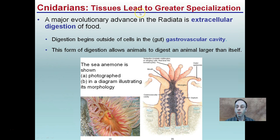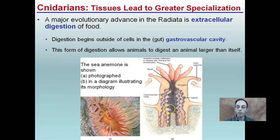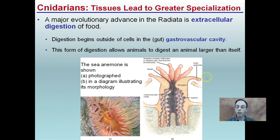In addition to tissues, a major evolutionary advantage is something called extracellular digestion of food. Digestion begins outside the cells, in the gut or gastrovascular cavity. This is a big advancement — it allows animals to digest prey larger than themselves by taking in portions of food particles and breaking them down. The gastrovascular cavity is located on the inner portion. Here we have a photograph and an illustration of its morphology, with this camera angle looking from the top down into it, showing evidence of the gastrovascular cavity.